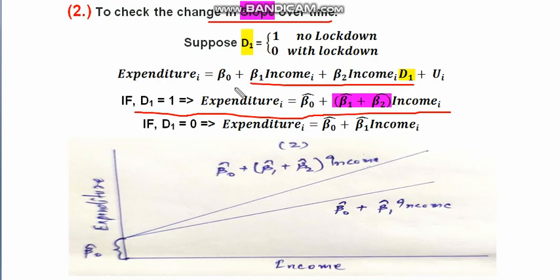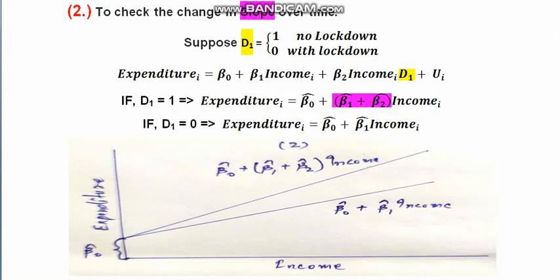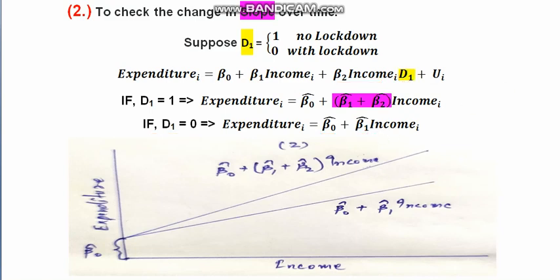When D1 equals 1 (normal days), estimating the equation gives beta-0-cap plus beta-1-cap times income plus beta-2-cap, so the effective slope on income becomes beta-1-cap plus beta-2-cap. When D1 equals 0 (lockdown days), the beta-2-cap term drops out entirely, and the estimated equation is simply beta-0-cap plus beta-1-cap times income.